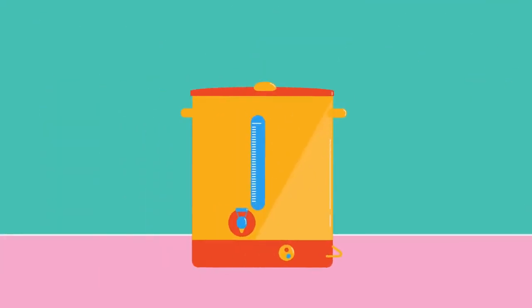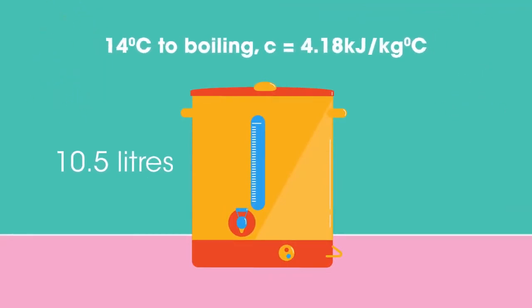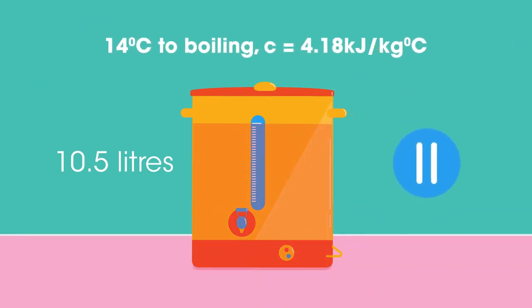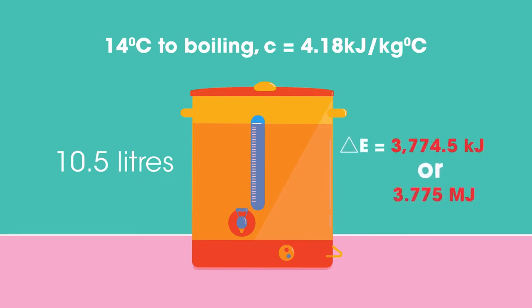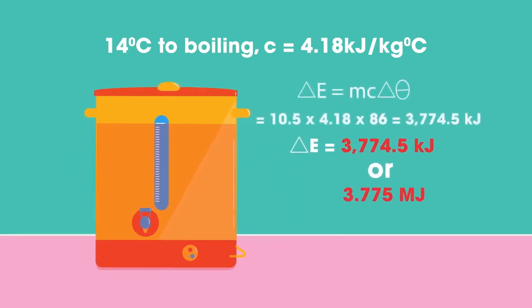This water boiler holds 10.5 litres of water. How much energy is transferred if the water at 14 degrees Celsius is heated to boiling point? Pause the video while you work it out. Did you get 3774.5 kilojoules, or 3.775 megajoules?